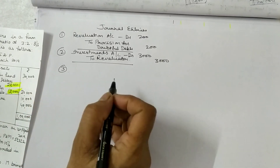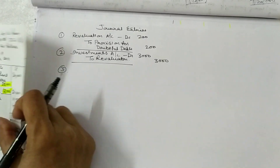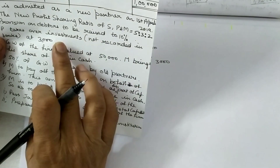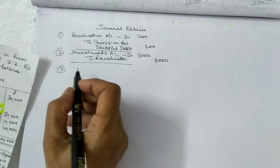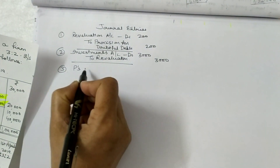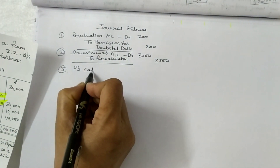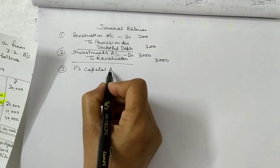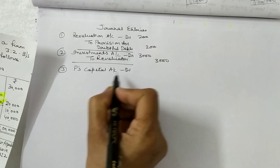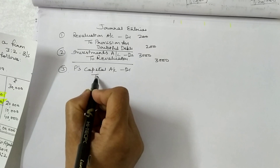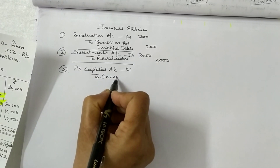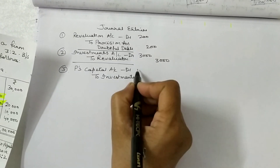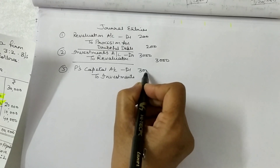Entry 3: P took over the investments, so P's Capital Account is debited to Investments Account, 3,000 and 3,000.